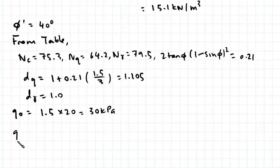So we can now go ahead and find our ultimate bearing capacity of the shallow footing. So q0, Nq, dq, plus 0.5. Here we use gamma design, multiplied by the effective width, Ngamma, dgamma.